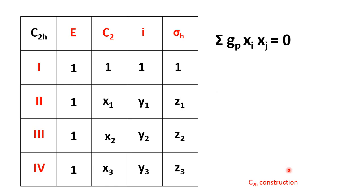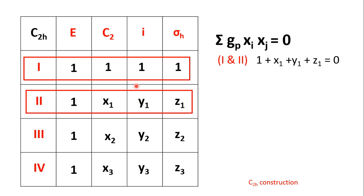According to the Great Orthogonality Theorem, the summation of gp × chi_i × chi_j = 0, where gp is the number of operations in each class (all equal to 1 here), chi_i represents characters in one irreducible representation, and chi_j represents characters in another. Applying this to irreducible representations 1 and 2: 1×1 + 1×x1 + 1×y1 + 1×z1 = 0, giving 1 + x1 + y1 + z1 = 0.